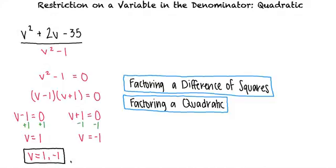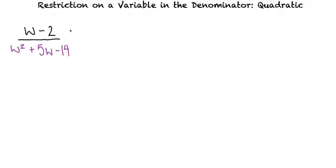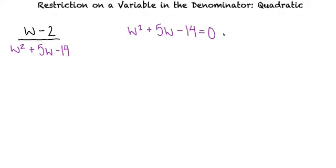Why don't we take a look at another example? (v − 2) over (v² + 5v − 14). We want to find all the values of v for which the expression is undefined. The expression is undefined when the denominator equals 0, so we should start by setting v² + 5v − 14 equal to 0.